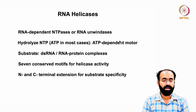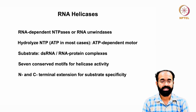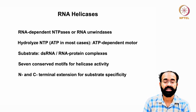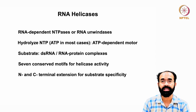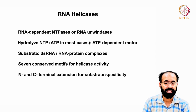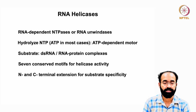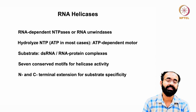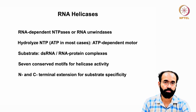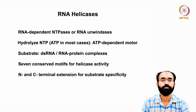In summary, RNA helicases are RNA-dependent NTPases or RNA unwindases. They hydrolyze NTPs — usually ATP — performing as an ATP-dependent motor. Their substrates include double-stranded RNA or RNA-protein complexes (RNPs). They usually have seven conserved motifs for helicase activity, and N- and C-terminal extensions for substrate specificity. The protein must retain substrate specificity, be able to utilize ATP, and have helicase activity — without these, the protein would not qualify as a helicase.